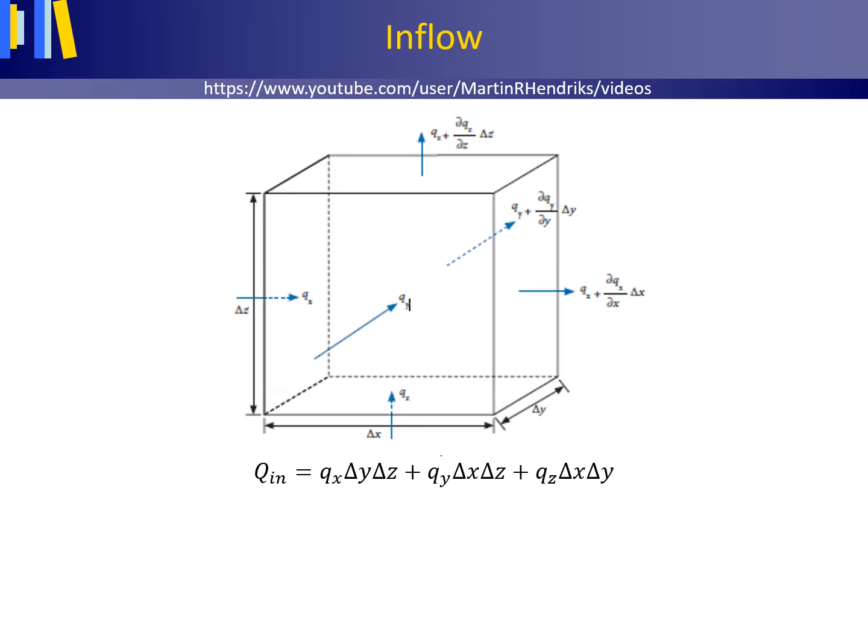The inflow is given by this equation. Q in in cubic meter per day equals Qx times the area delta y delta z perpendicular to the groundwater flow in the x direction plus Qy times the perpendicular surface delta x delta z plus Qz times the perpendicular surface delta x delta y.